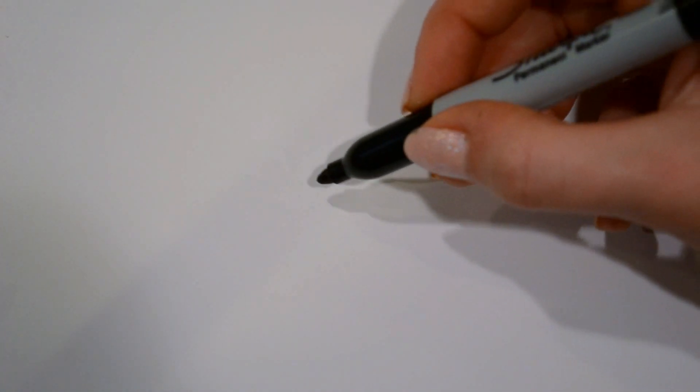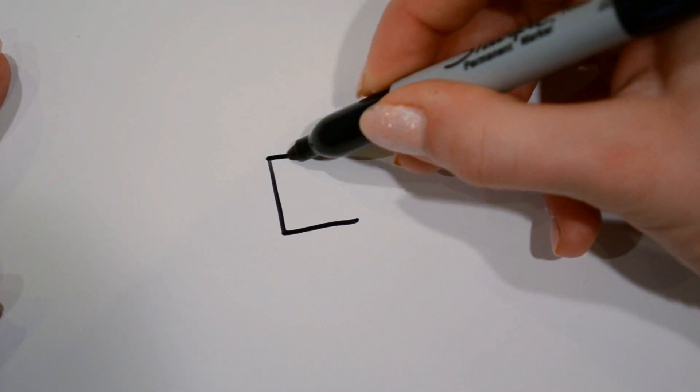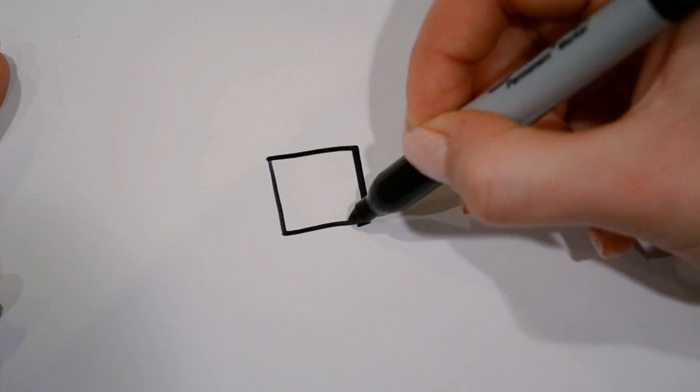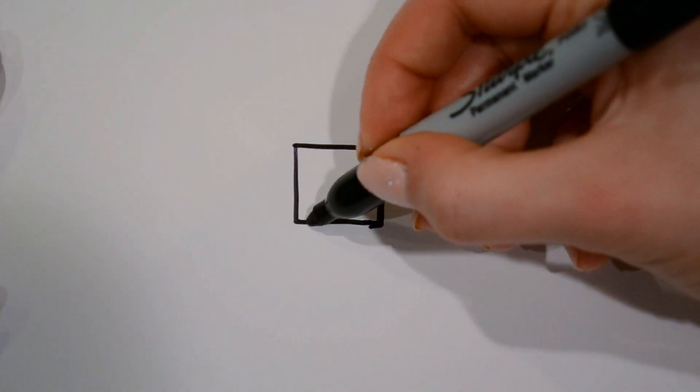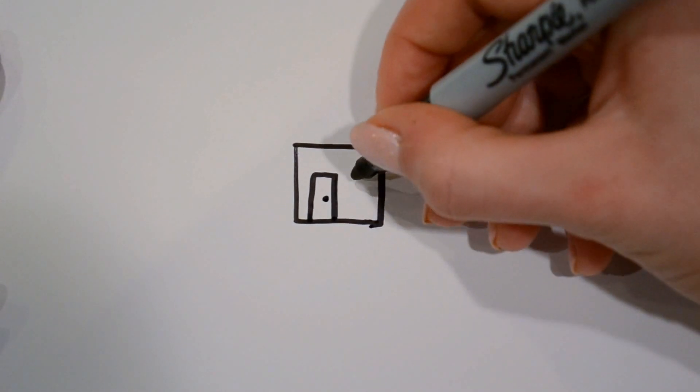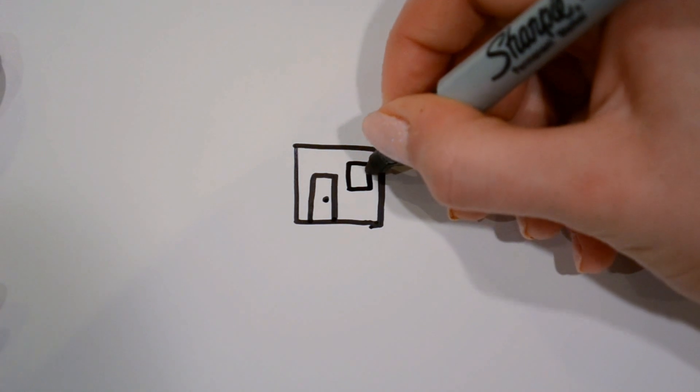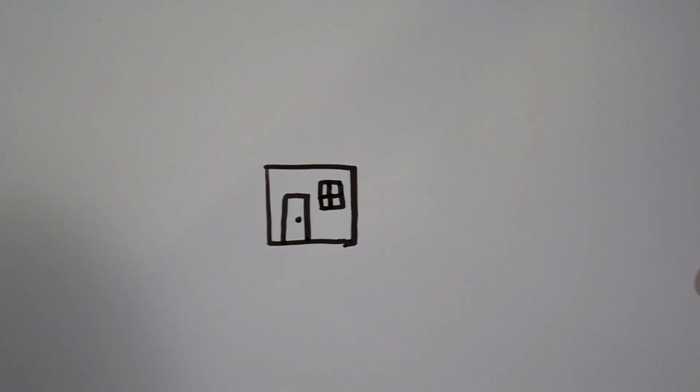First you start off by drawing a square for the first one. And then on the inside I'm going to draw a rectangle door and a circle knob. And then I'm going to draw a square window a little bit higher than the door with two lines inside of that.